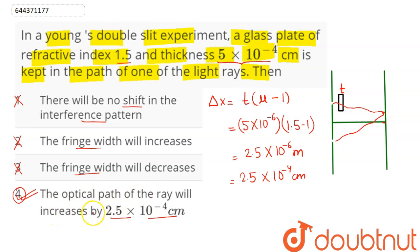Hence, we can see here, that option number 4, that is, optical path of the ray increases by 2.5 into 10 power minus 4 centimeter. That is, we have here, option number 4 as the correct answer. So, 4 is our answer correct.